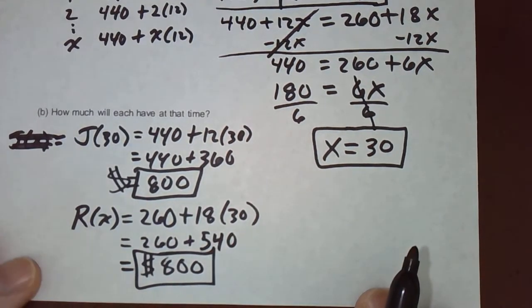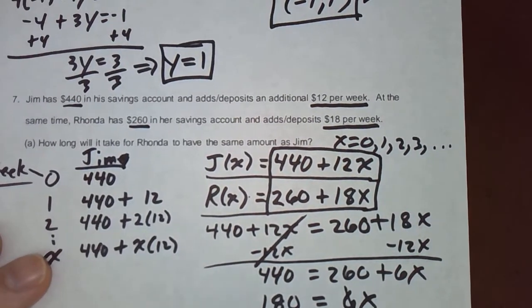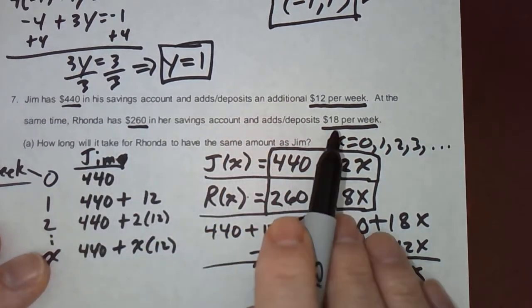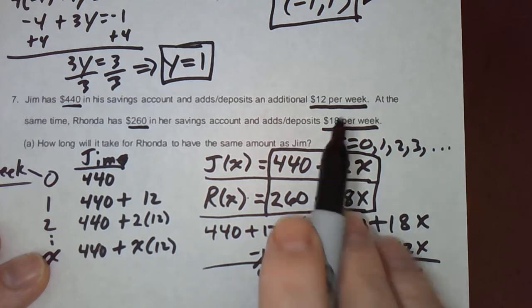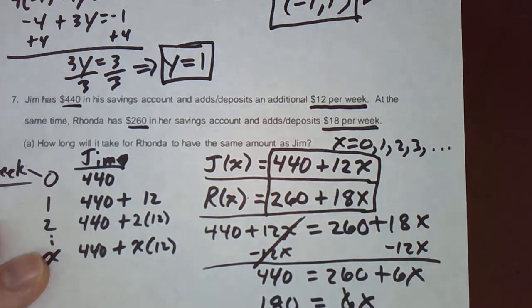So we discovered that at week 30, Jim and Rhonda would have the same amount of money in the bank. And that amount would be 800 dollars. So at week number 31, or 32, or 33, do you know who would have more money? From now on, it's going to be Rhonda. Because at week 30, they have the same amount. But she continues to put 18 per week in her account. Where Jim only puts 12 dollars per week in his account.